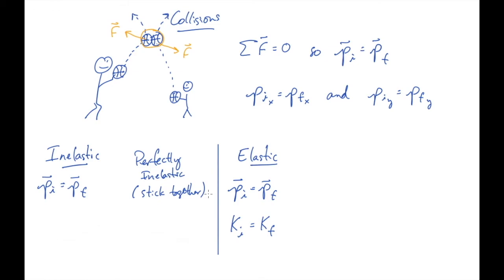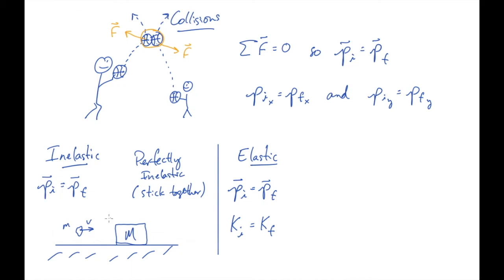We talked about a perfectly inelastic collision in the last talk. Remember we had this big block with mass capital M, and we had this wad of putty with mass little m, that somebody was going to throw at it with velocity little v, and they stuck together so that the two of them drifted off.